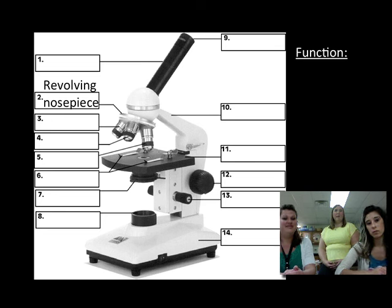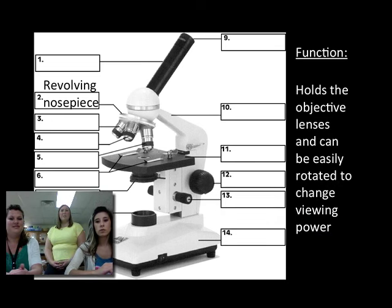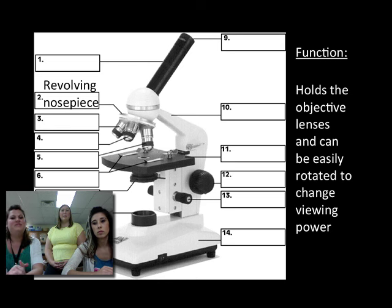The second one is the revolving nose piece. Its function is to hold the objective lens so it can be easily rotated to change the viewing power.